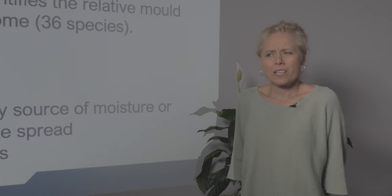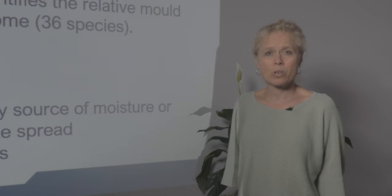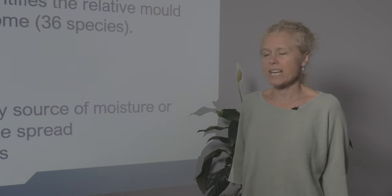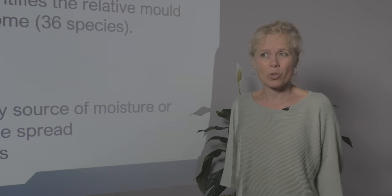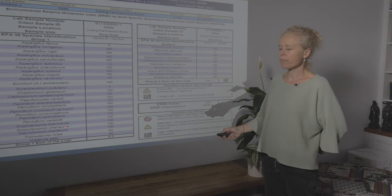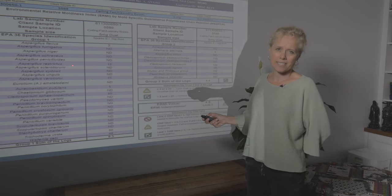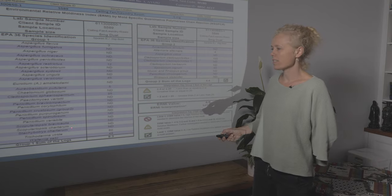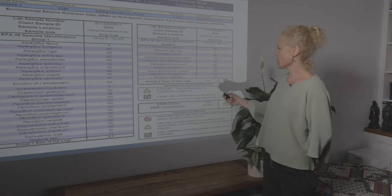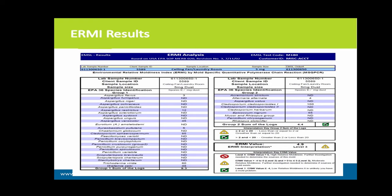ERMI doesn't identify the source of moisture — once you get an elevated ERMI it doesn't tell you where the moisture was, what the moisture-laden materials were, or how to develop a scope of remediation. You still need a mould testing technician or building biologist to do a complete assessment. The ERMI report identifies 26 water-damaged pathogenic species and 10 healthy ones, sets up a ratio, and gives an overview. If you're picking up toxic species that produce mycotoxins, that can be useful. In this example the ratio is 4.9, which is considered elevated.